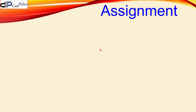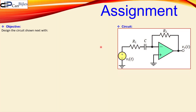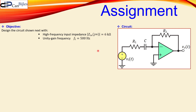Our assignment is to design the circuit shown. That means we need to determine the values of resistors R1 and R2 and the capacitor. The high frequency input impedance must be six kilo ohms — at high frequencies the capacitor is a short, so we need to see a six kilo ohm input impedance. The unity gain frequency FT must be 500 hertz and the cutoff frequency must be 10 kilohertz.